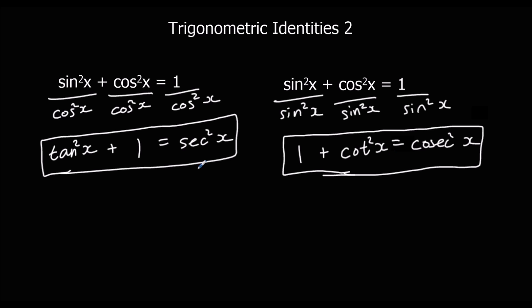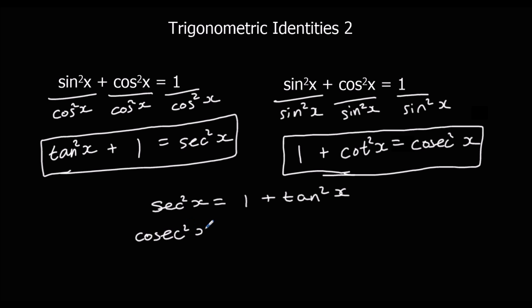So now we've got the identity sec²x = 1 + tan²x, or cosec²x = 1 + cot²x. We need to remember these two identities. Cosec goes with cot — they both begin with 'co' — so cosec²x is 1 + cot²x, and sec²x is 1 + tan²x. If you don't remember them, you could always generate them again by taking the original identity and dividing through by cos and by sin.